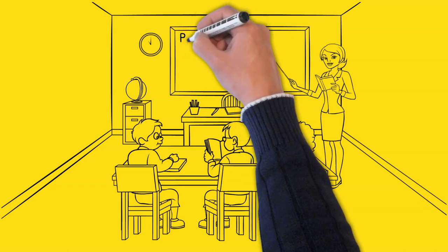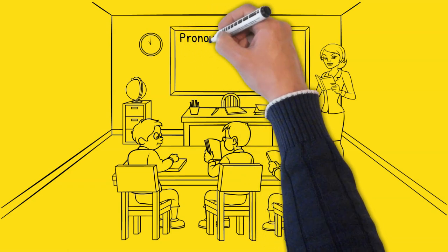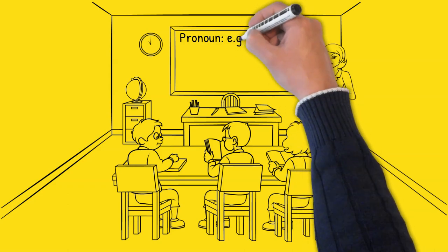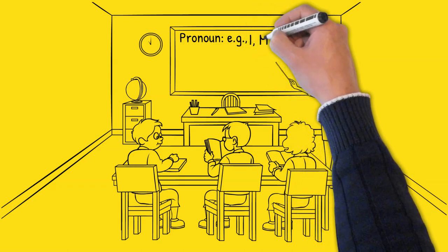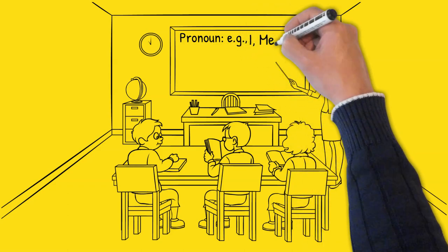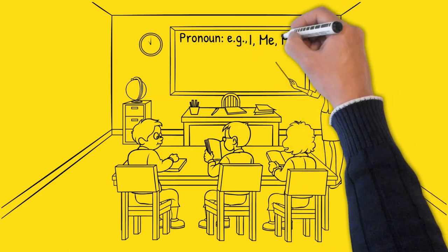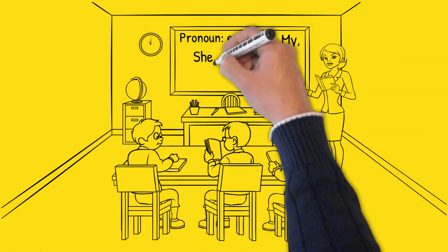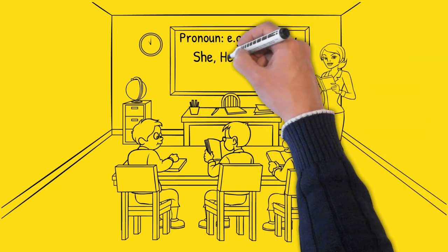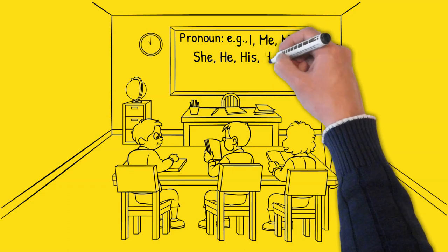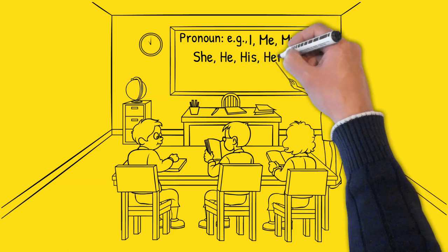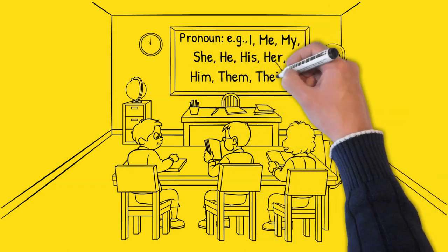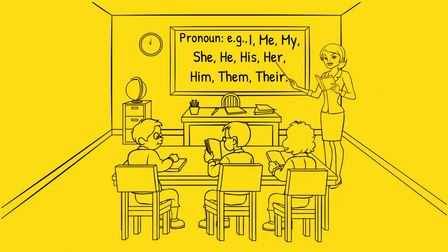Two: pronoun — used instead of a noun. Examples include I, me, my, she, in, is, her, him, them, their, and so on.